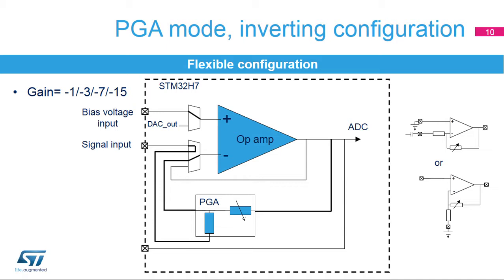The STM32H7's op-amps support inverting amplifier mode with four fixed gains available. The feedback resistors can be selected to have a gain of minus 1, minus 3, minus 7, or minus 15 to support the programmable gain amplifier function. By using this configuration, it is possible to shift the bias voltage of the input signal with an AC coupling capacitor.